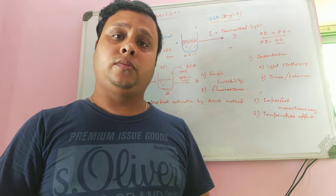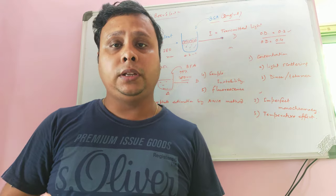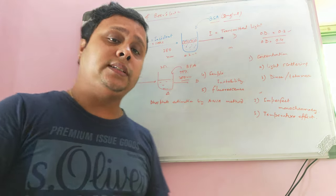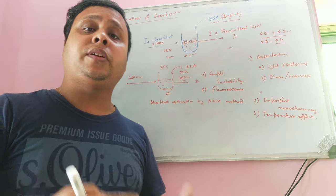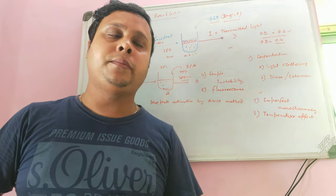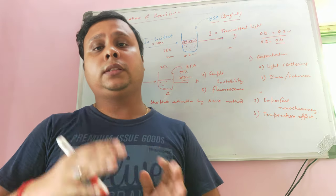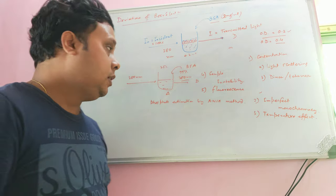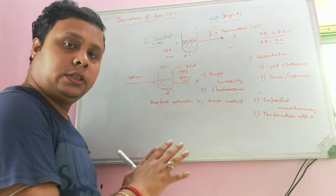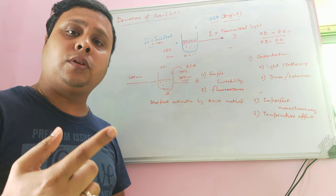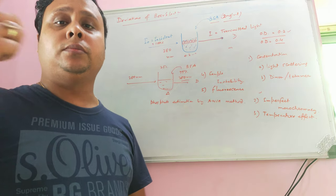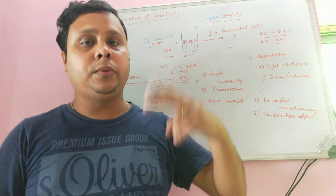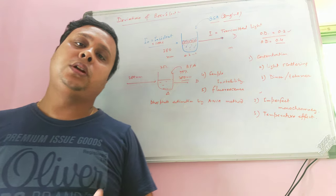However, if the sample contains fluorescent molecules such as fluorescamine or rhodamine, after receiving 280 nm light they will emit light of a longer wavelength — for example 300 nm or 320 nm, always greater than 280 nm. In that case, the detector will receive two different wavelengths: the transmitted 280 nm light and the fluorescence emission at a longer wavelength. This causes the actual OD value to differ from the expected value.